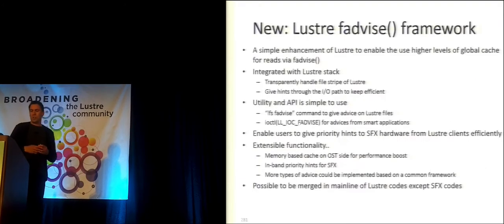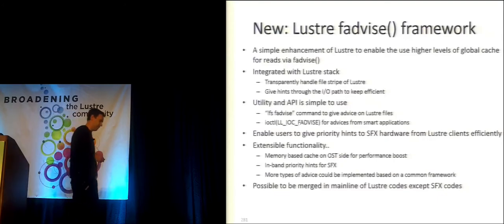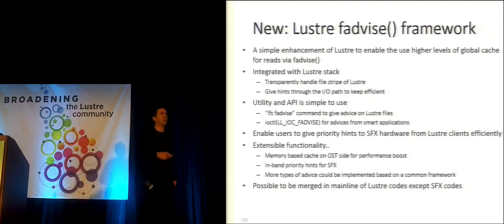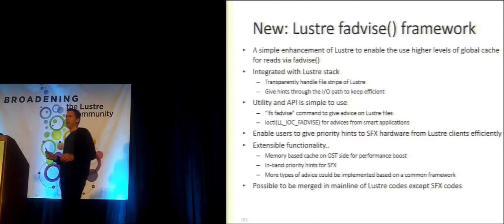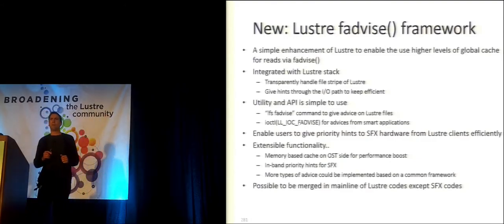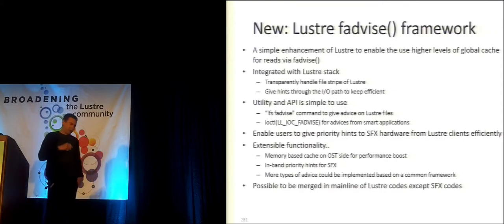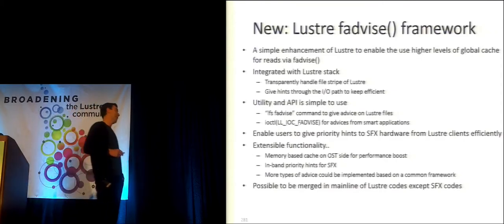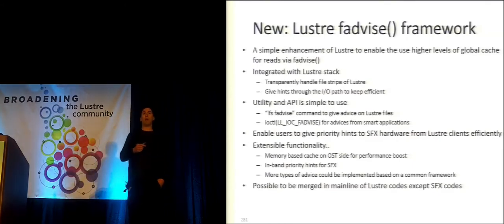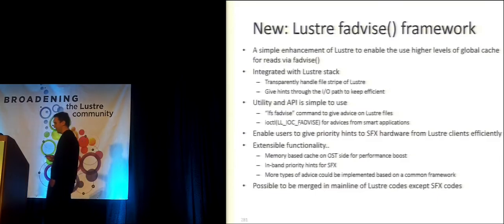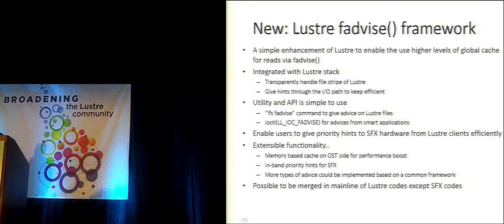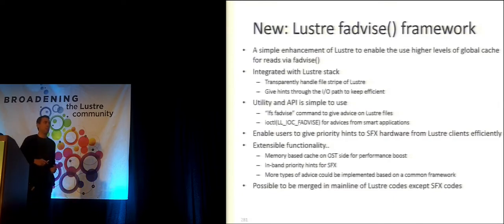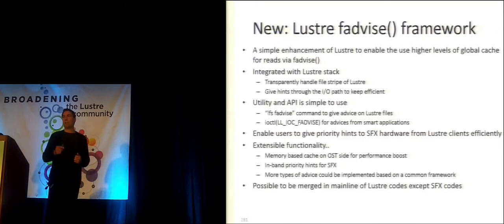At DDN, we've been doing some work on this and created something called the Lustre FAdvise framework. There is something called POSIX FAdvise, which probably works with the Lustre client right now. This allows a user or an application to specify how it's about to read some data — specifying a set of blocks or an offset, and also telling the underlying backing device whether it expects random or sequential reads.